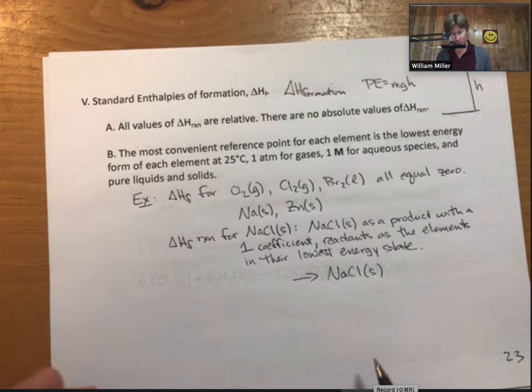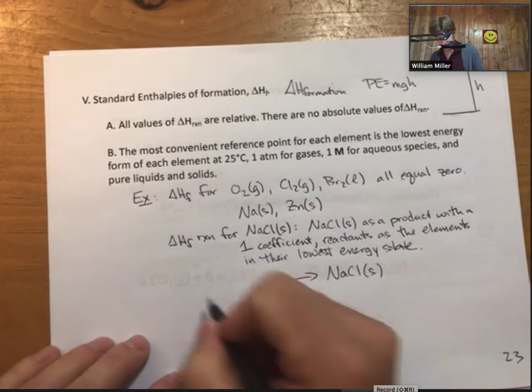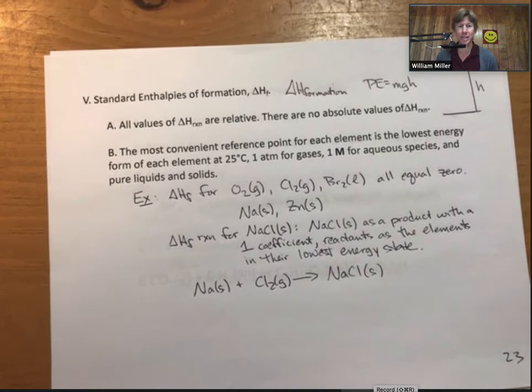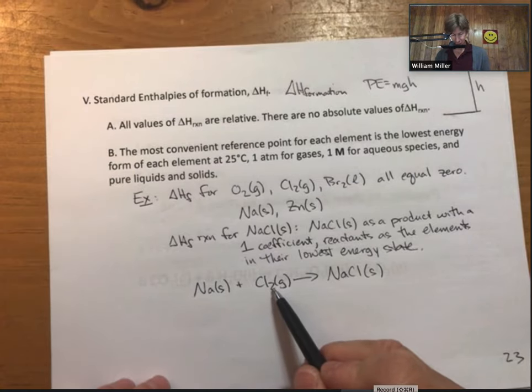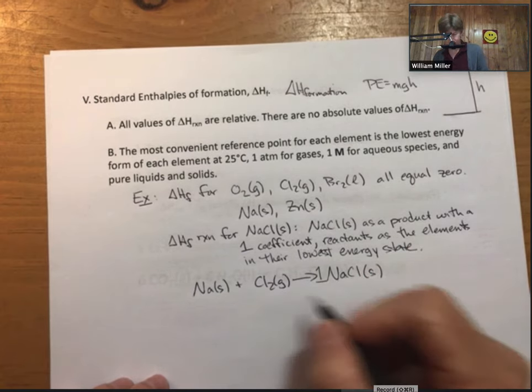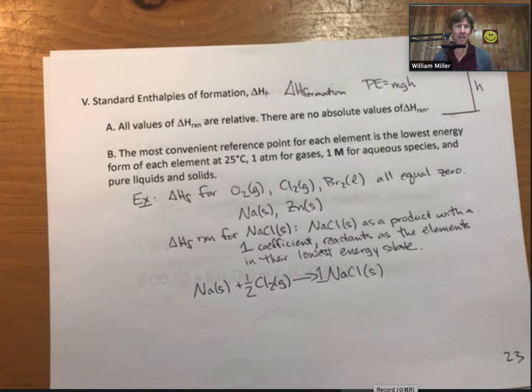Then think about what the lowest energy states are for each of the elements in sodium chloride. That would be sodium solid. That would be chlorine gas, and I can see that I've got two chlorines here, but only one chlorine on the product side. I know it's a little weird, but this final answer has a half coefficient in it. And the way that a thermochemist or a thermodynamicist, a scientist who works with thermodynamics and thermochemistry would look at this as they would say,